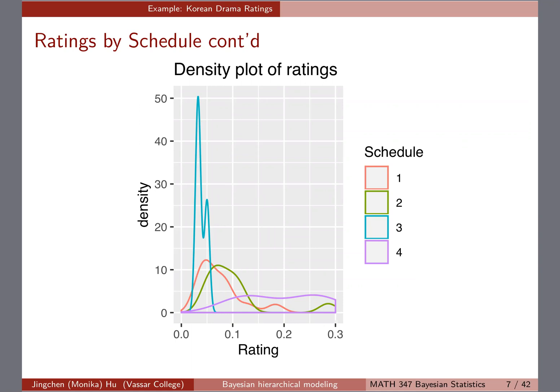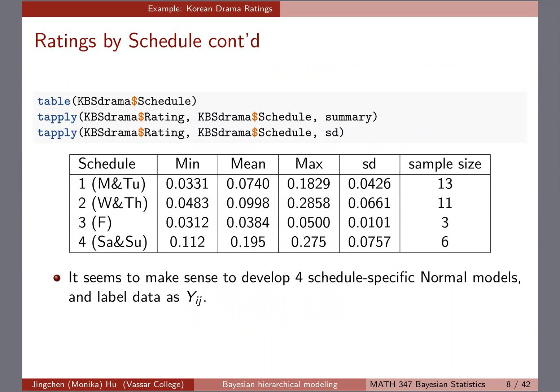Anything about one and two? They look similar. And four overall seems to be probably the highest rating—that's Saturday and Sunday. Looking at the mean and standard deviation, schedule number four has the highest, almost like twice. Sample size is sort of median, whereas Monday-Tuesday and Wednesday-Thursday have higher sample sizes.